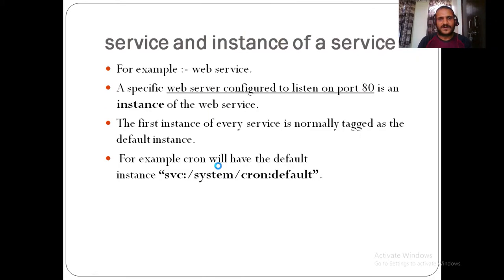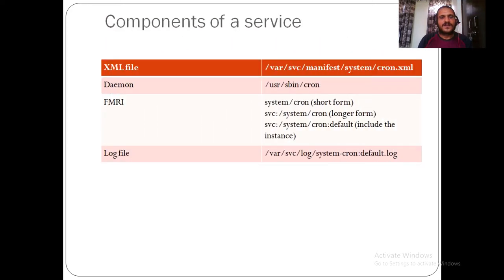Consider a web server: the web service is the entire setup, while the web server is an instance. The components of a service include: an XML manifest file under /var/svc/manifest, a daemon supporting the service, an FMRI (short or long name), an instance, and a log file. All four components must be available for the service to execute.